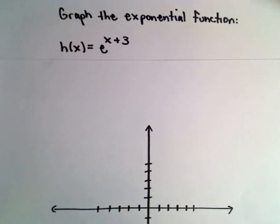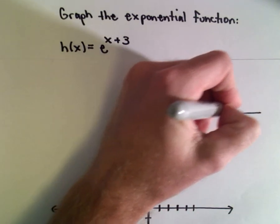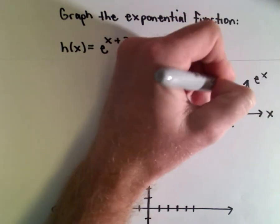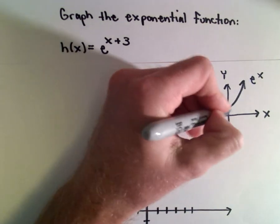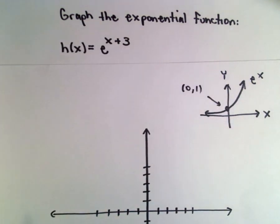So recall that e to the x is our exponential function. Since e is greater than 1, e to the x will be an increasing exponential function. Notice that that goes to the point 0, 1.